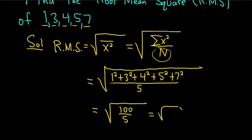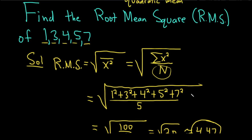So this is the square root of 20, which I believe is roughly 4.47. Let me just double check that. The square root of 20 is roughly, yep, roughly 4.47. That would be the root mean square.